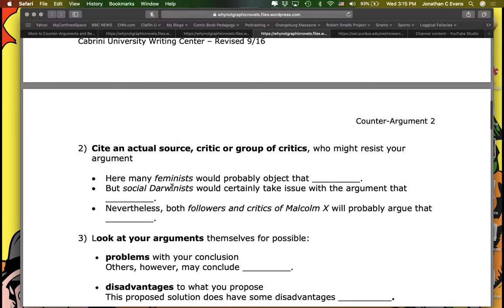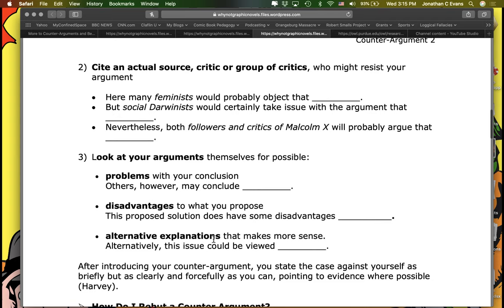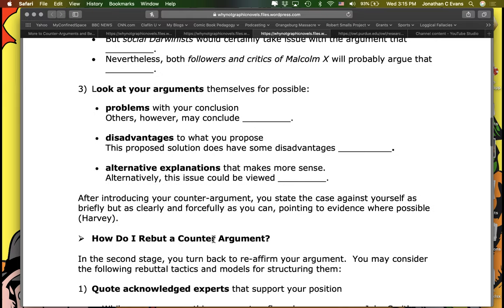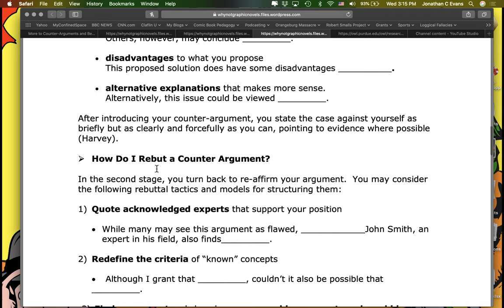And then, of course, it goes on through a couple different ways. Introduce a skeptical reader. Cite the actual source. So this is the idea here of moving to the next step, that you actually give information that comes from the opposition. Look at your arguments themselves for possible problems, disadvantages, alternate explanations. After introducing your counter argument, you state the case against yourself briefly, but clearly and forcefully as you can. Point to evidence where possible.